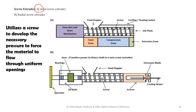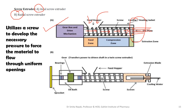Here you can see two figures — figure A showing an axial screw extruder and figure B showing a radial screw extruder. In the axial extruder, the screen through which the wet mass is passed to form cylinders is placed at the end of the screw. The wet mass is fed through the hopper, falls onto the screws, and because of the direction of the screws, it keeps getting pushed ahead and under pressure comes out through the screen in the form of cylinders. The screen is placed perpendicular to the axis of the screw — hence it is called an axial screw extruder.